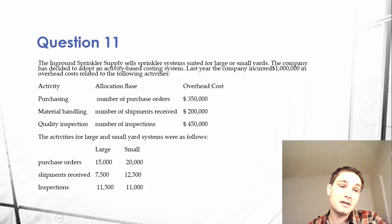The activities data shows purchase orders: 15,000 large and 20,000 small. Shipments received: 7,500 large and 12,500 small. Inspections: 11,500 large and 11,000 small.